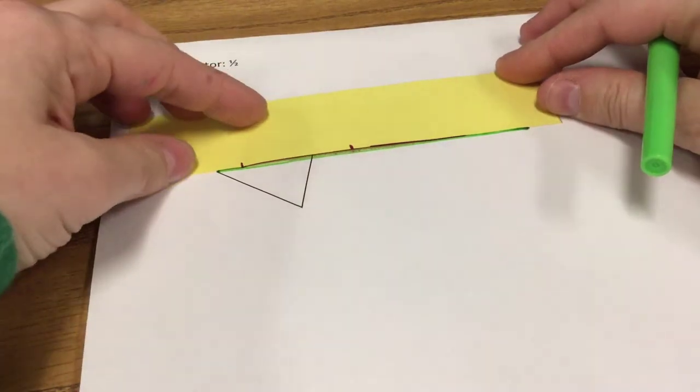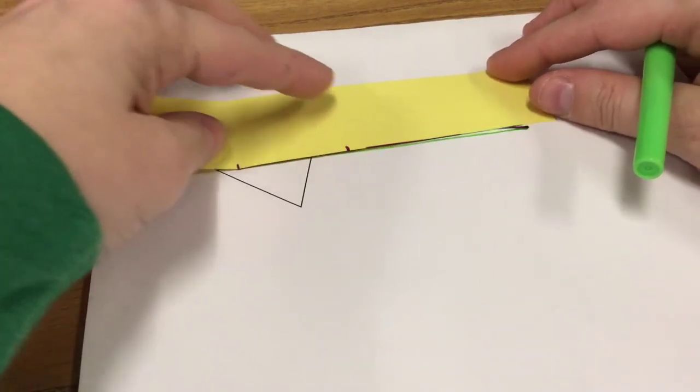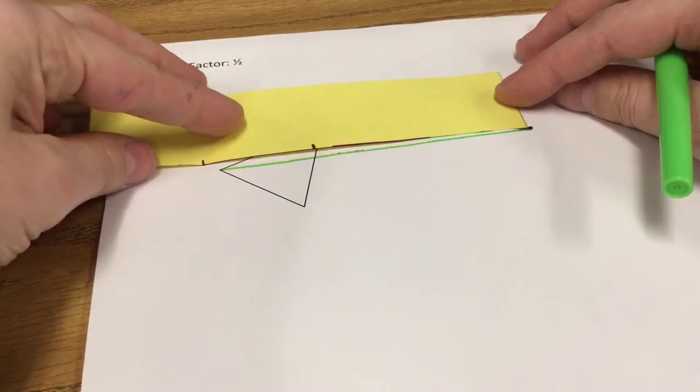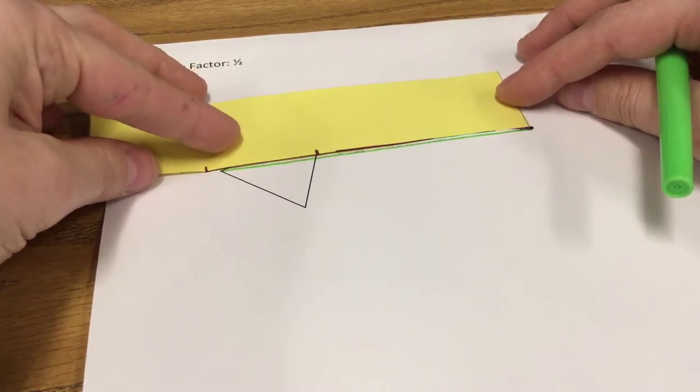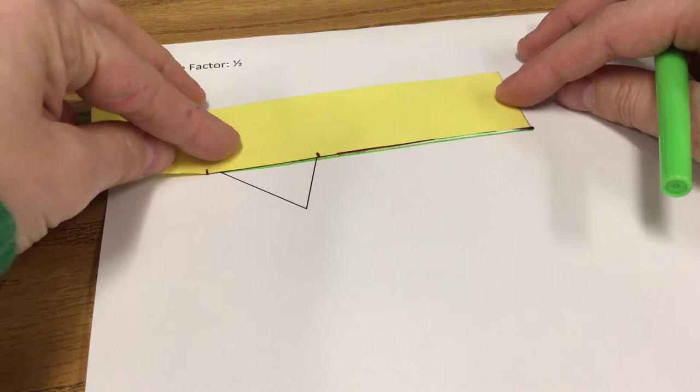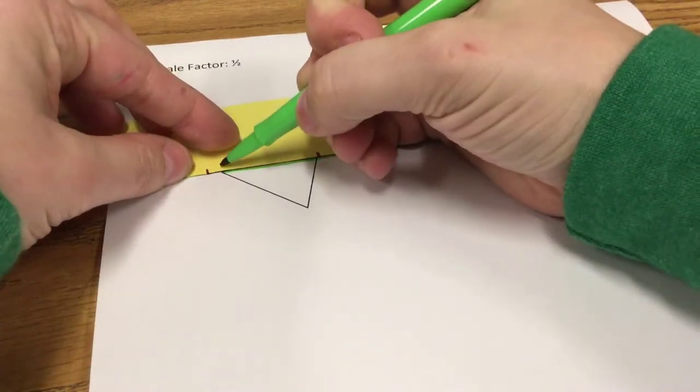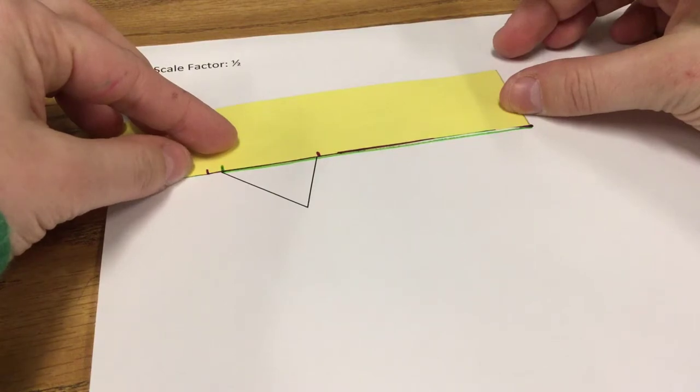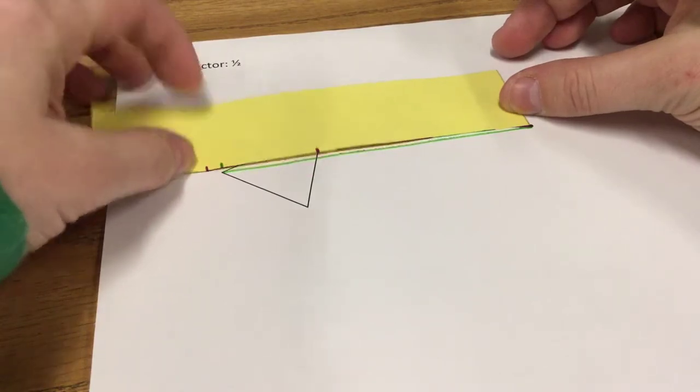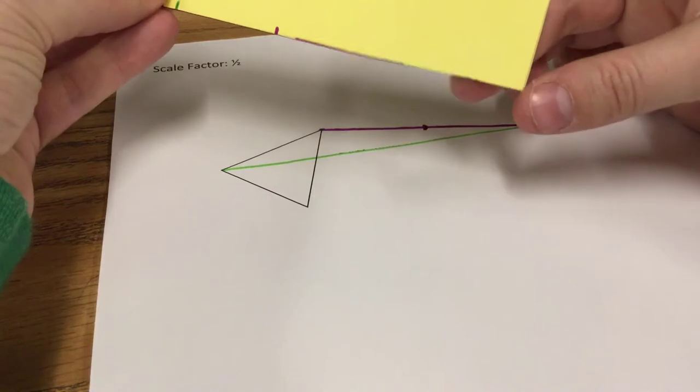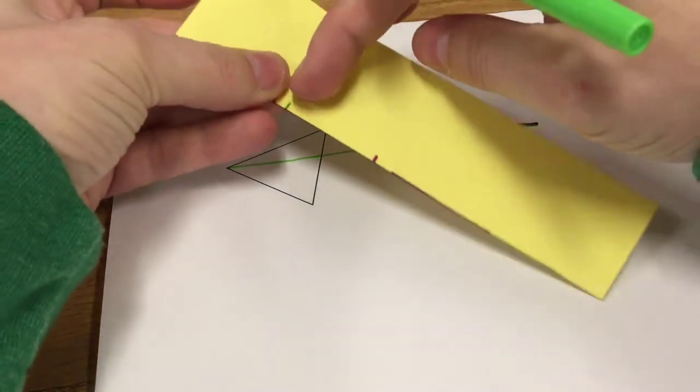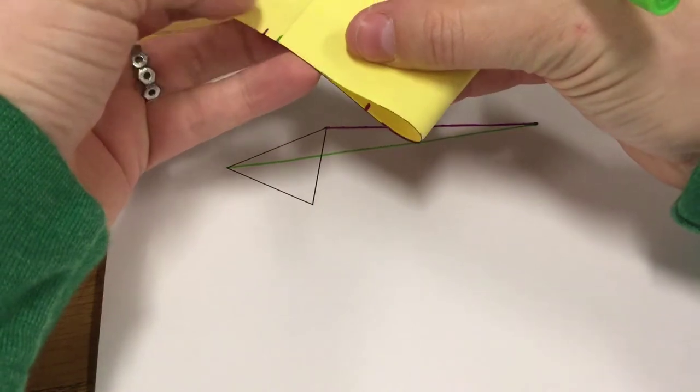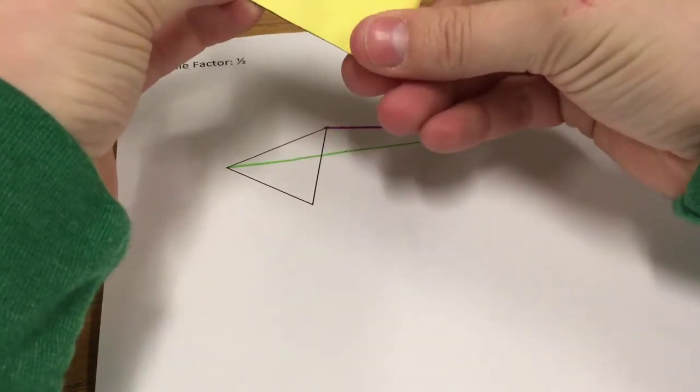Remembering we don't need to extend beyond the vertex because we are reducing. We're getting smaller. Line up the corner of the paper on the center of dilation and mark where the vertex is of the triangle we're using. Because this has a scale factor of one-half, we're going to fold that corner from the center of dilation up to where the vertex was marked.